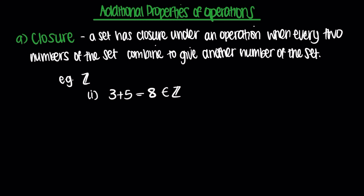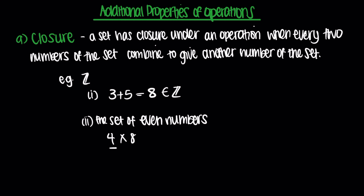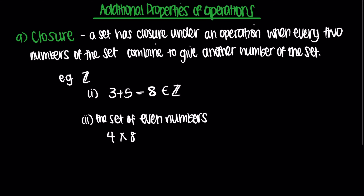Next example: we have a set of even numbers and we're multiplying 4 by 8. 4 is an element in the set of even numbers, and 8 is also an even number. 4 multiplied by 8 equals 32, and 32 is an even number. So we see that there is closure for multiplication in the set of even numbers.